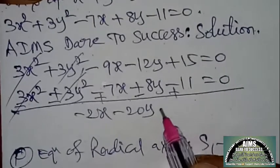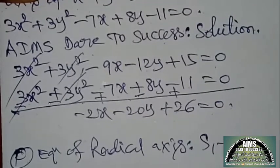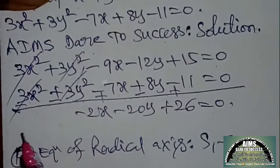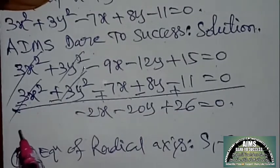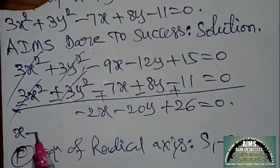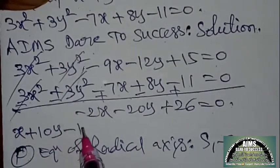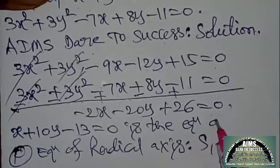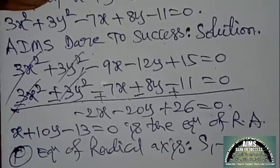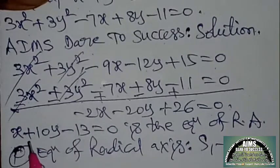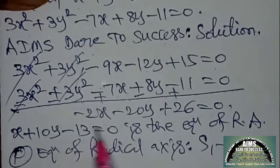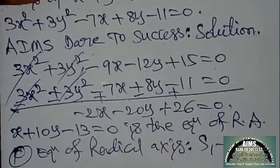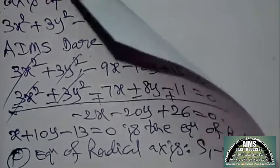15 + 11 = 26. So −2x − 20y + 26 = 0. Taking −2 common, after simplification: x + 10y − 13 = 0 is the equation of the radical axis. I hope you understand, my dear students.